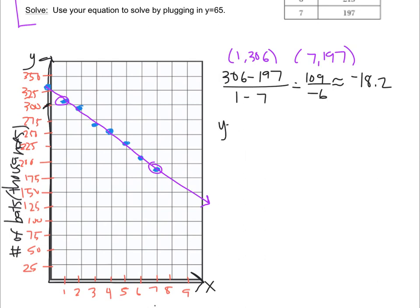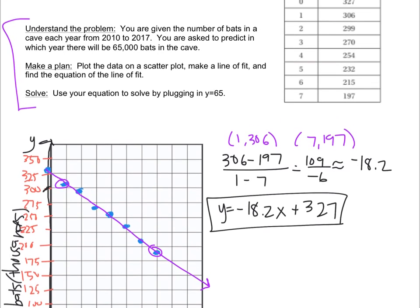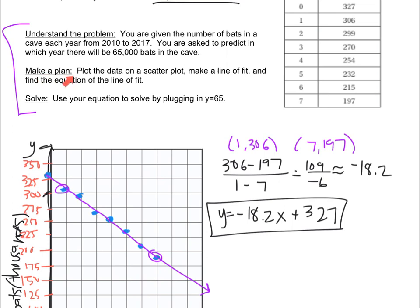Now the last thing up top in the solve section, right, if we look at all the things, we did everything here. And then the last thing is to use our equation to solve by plugging in y equals 65. And we're plugging in 65 for y, because y was the number of bats. And also, we're plugging in 65 because it's in the thousands. So instead of plugging in 65,000, we're actually just plugging in 65. So I'm going to start you, and then you're going to finish it.